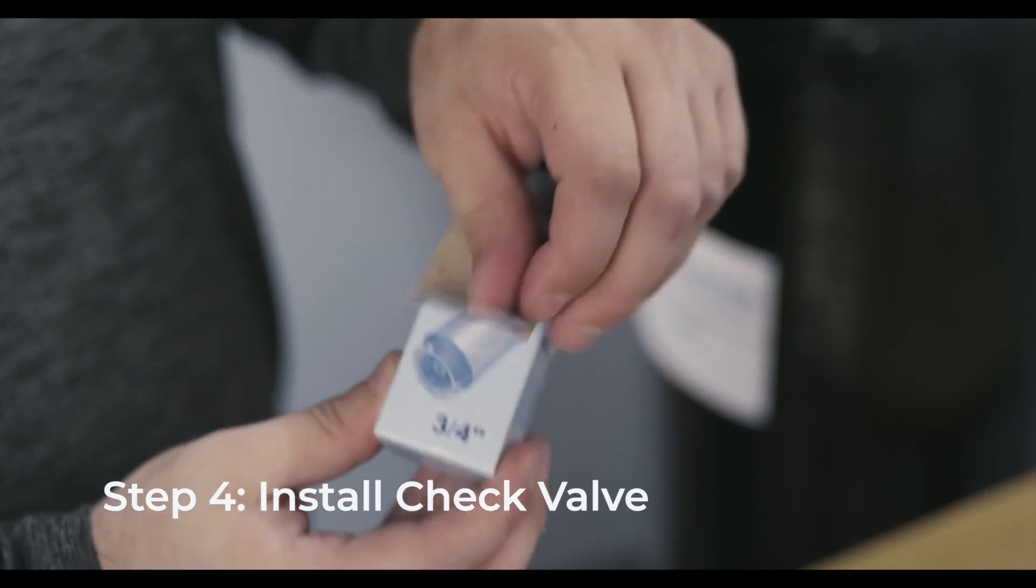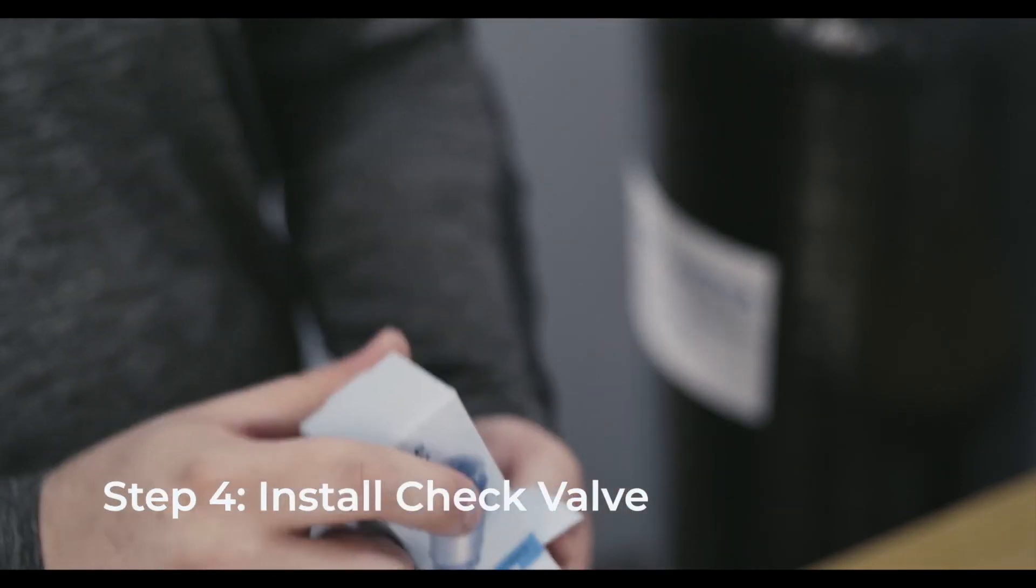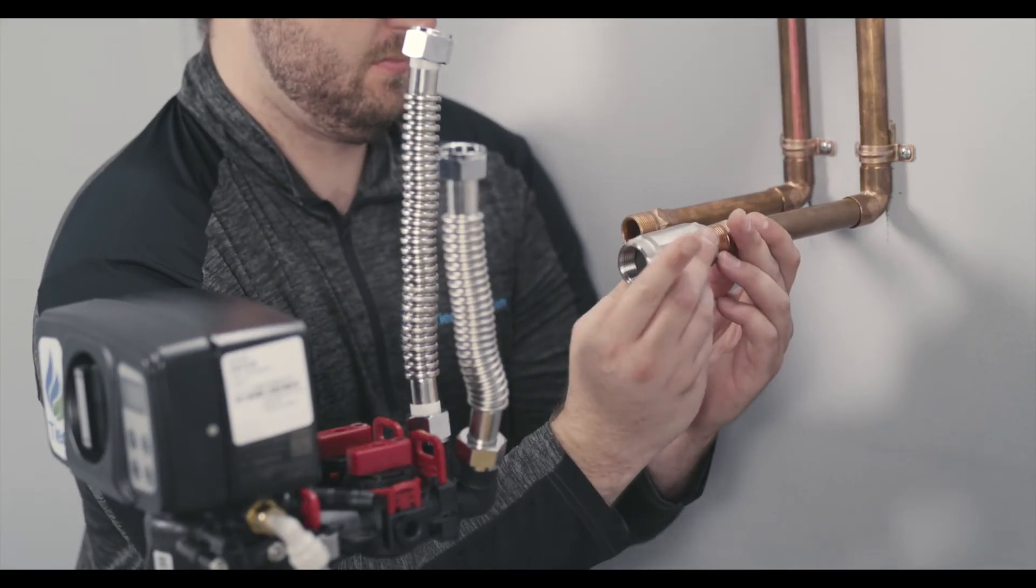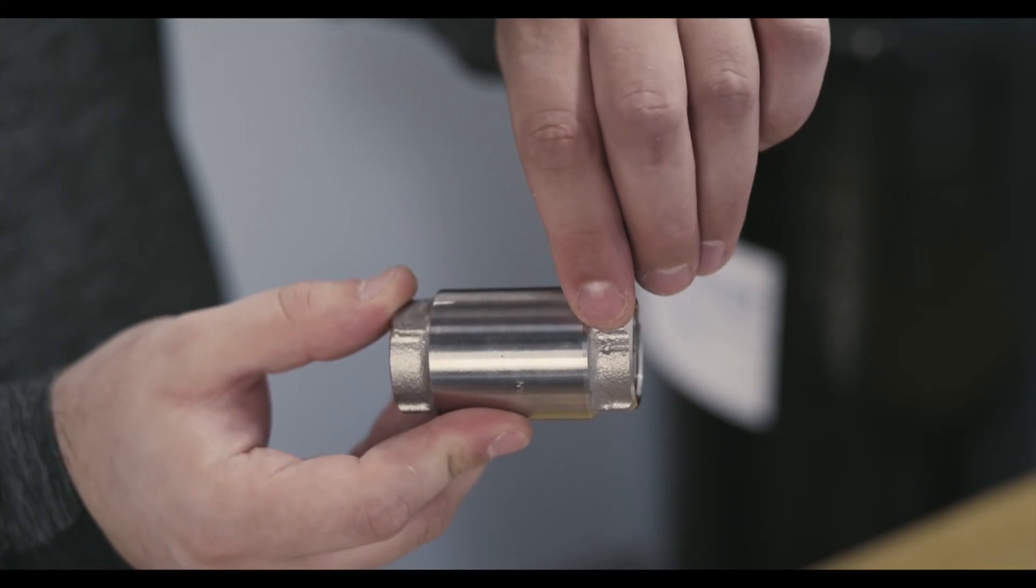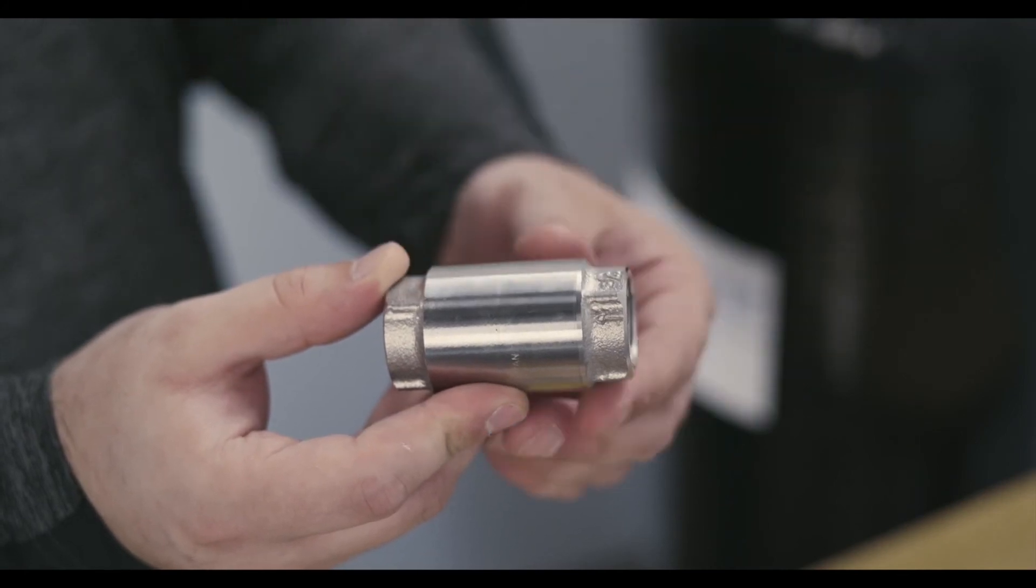Locate and install the three-quarter inch check valve on the bypass valve inlet. The check valve needs to be installed at the highest possible level of the plumbing line to avoid air trap. The water flow directional arrow on the check valve should point toward the filter.